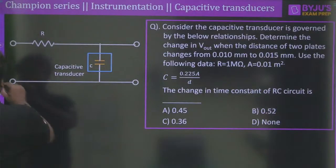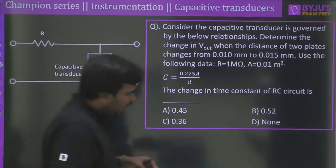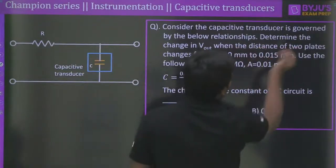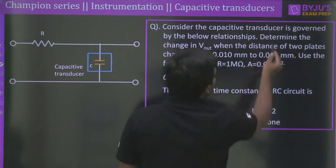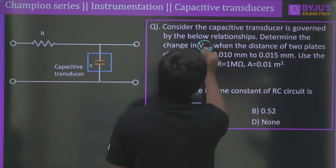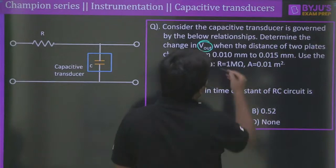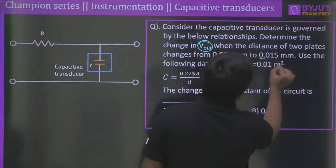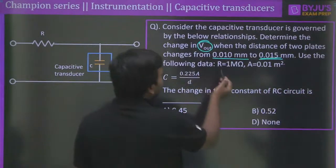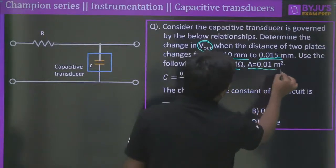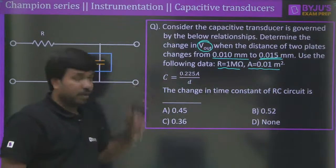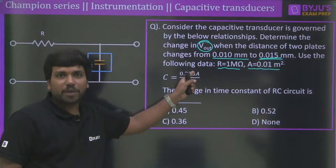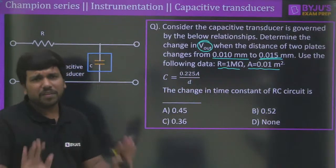Moving to the next question, which is a really good one. Consider a capacitive transducer governed by C = 0.225·A/D, where A = 0.01 m² and R = 1 MΩ. The distance between the plates changes from 0.010 mm to 0.015 mm. Determine the change in output voltage and the change in time constant of the RC circuit.